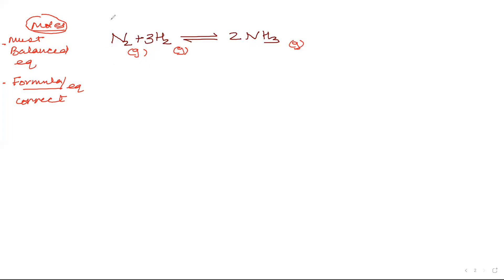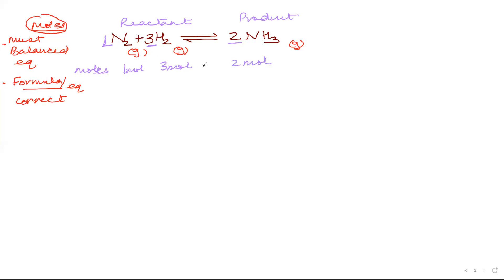Looking at this balanced equation, we can derive that one mole of nitrogen reacts with three moles of hydrogen (the coefficient is 3; when nothing is written, it's understood as 1) to produce two moles of ammonia. The coefficients in front of reactants and products represent the moles. From a balanced equation we can derive important facts about moles, masses, and volumes.